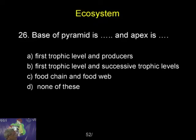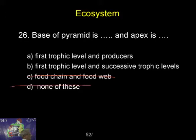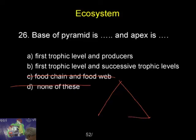The base of the pyramid is the first trophic level — the producers. The apex represents the successive trophic levels. This relates to the food chain and food web. The first trophic level consists of producers, and the successive trophic levels follow above them. In the pyramid, which represents the correct structure — let's work through this.